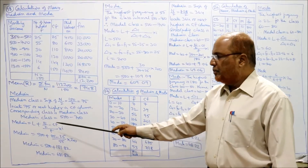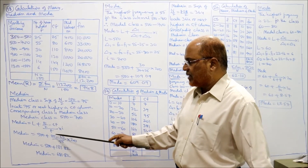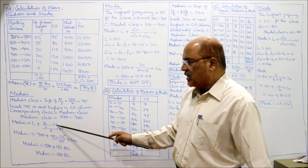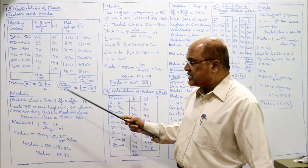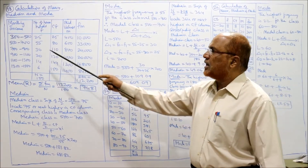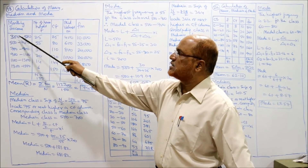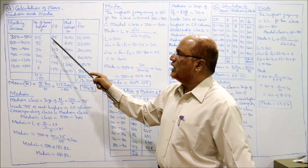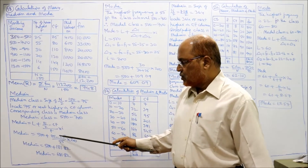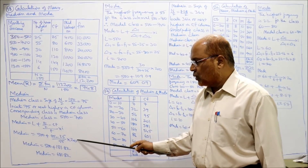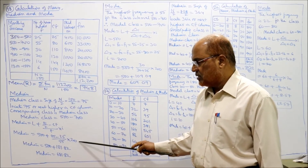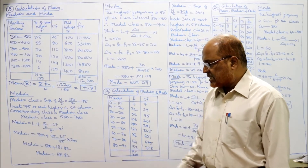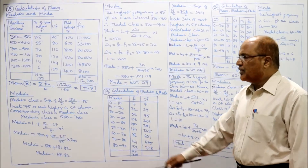Median = L + [(N/2 − CF) / F] × I. Lower limit L = 500, N/2 = 75, CF = cumulative frequency of the class preceding the median class (300–500), which is 25. F = 55, I = 200 (width of the median class). So: 500 + [(75−25)/55] × 200 = 500 + 181.82 = 681.82. Median = 681.82.